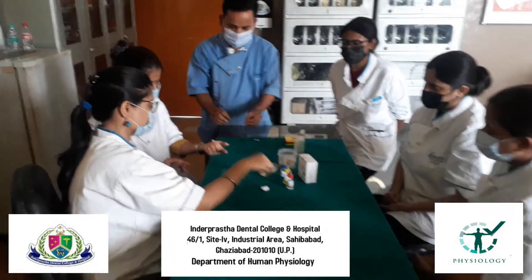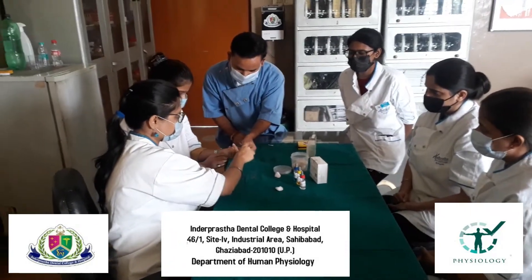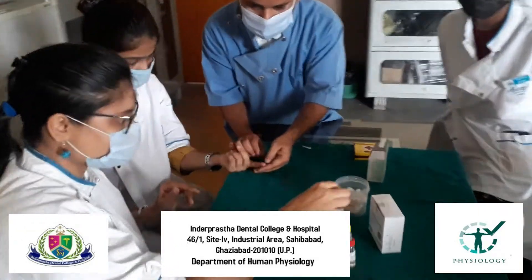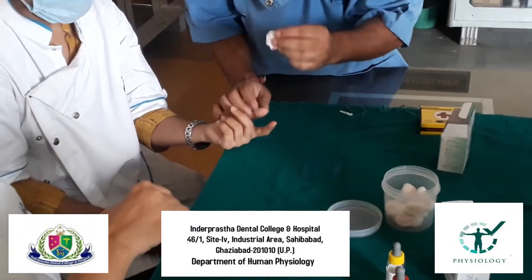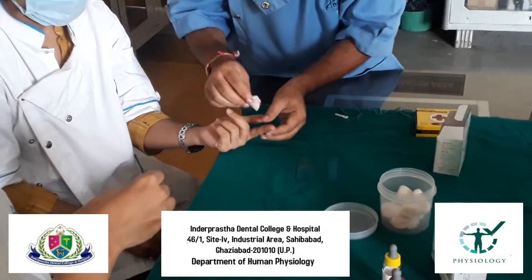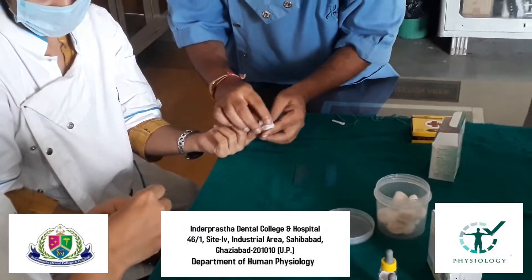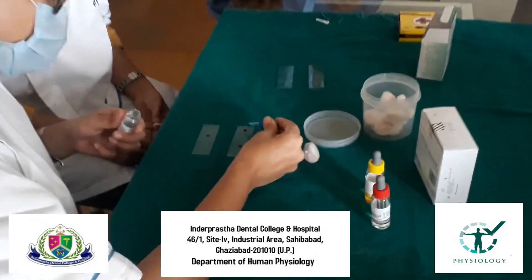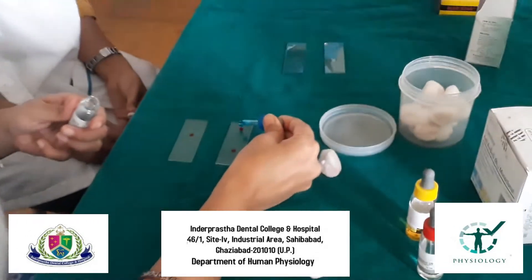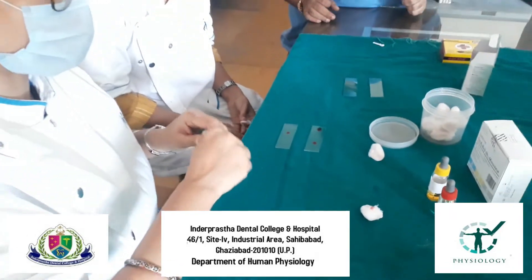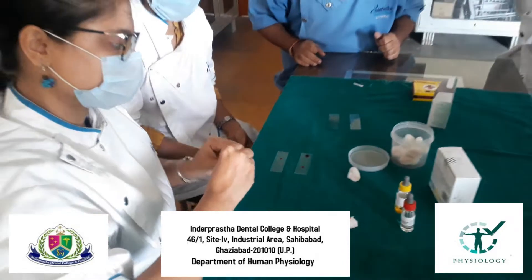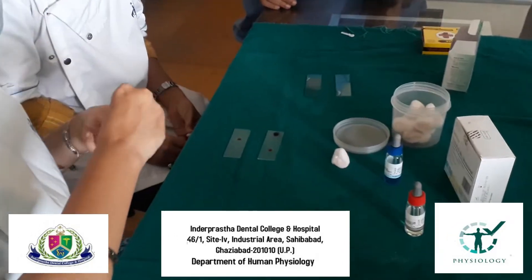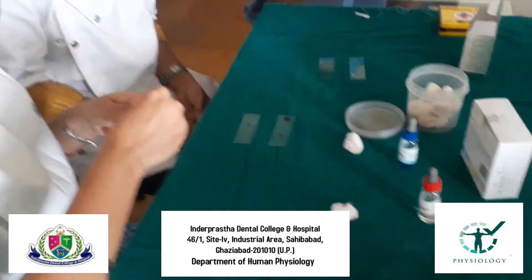Then, we have three anti-serums here. We have anti-serum A sample, anti-serum B sample, and anti-serum D sample. At first, we will add the anti-serum A and anti-serum B on the blood sample that has been taken on both sides of the first slide.